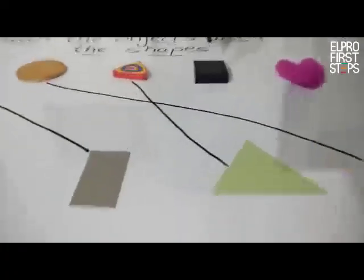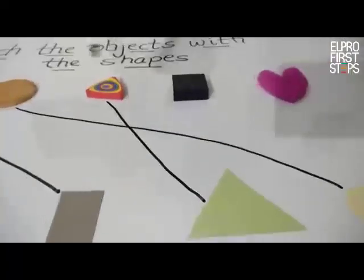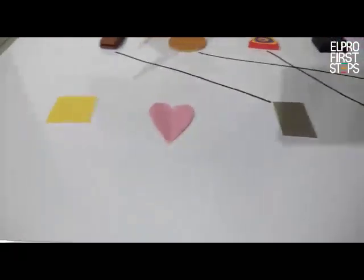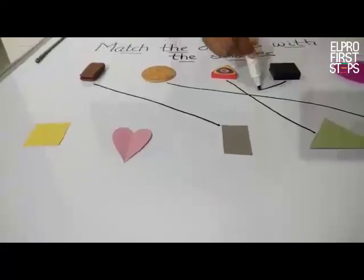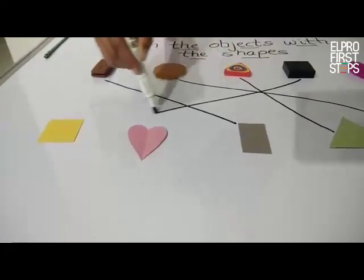I have a square here. Let's look for a square in the second line. There it is. Okay. A line from the lid to the square.